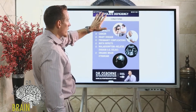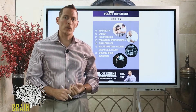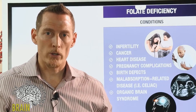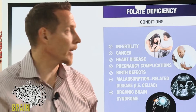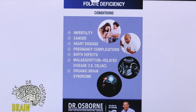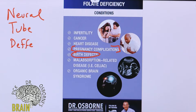Folate has many different functions: red blood cell production, DNA and RNA synthesis, detoxification, and neurotransmitter synthesis. But one of folate's other major roles — I'll circle this one — is birth defects and pregnancy complications. There's a term you've probably heard: neural tube defects. This is a major problem in the United States, even as an industrialized country.